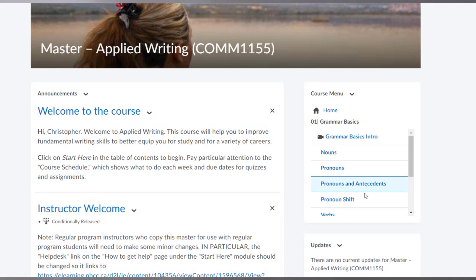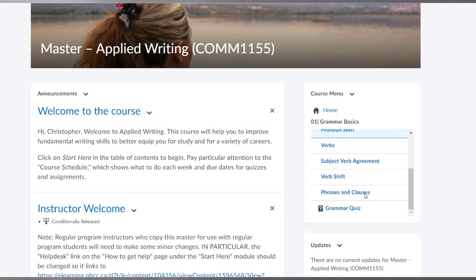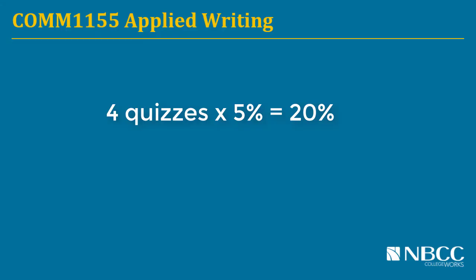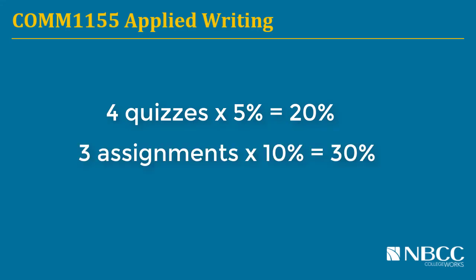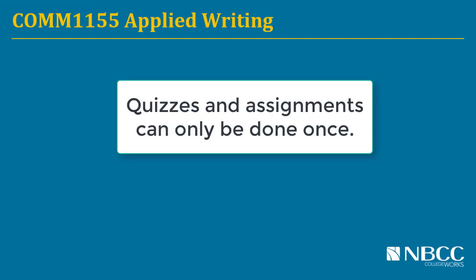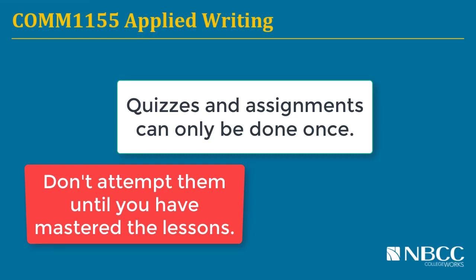At the end of each module is either a quiz or a writing assignment. The quizzes are each worth a total of 5% and there are four of them, so quizzes amount to 20% of the value of the course. The writing assignments are worth 10% each and there are three of them, so that's 30%. The quizzes and the assignments can only be done once, so take your time and do a good job, and make sure you don't attempt them until you feel that you've mastered all of the content in the lessons for that module.